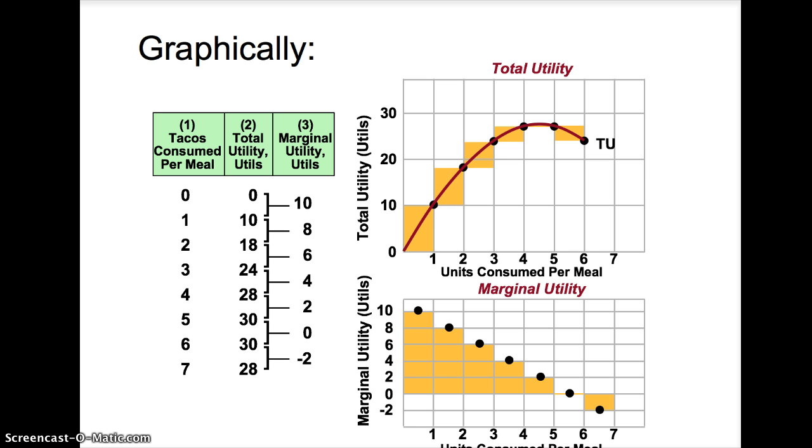The diagram showing marginal utility is a great visual of the law of diminishing marginal utility. Additional satisfaction decreases as more tacos are consumed. In fact, the seventh taco yields dissatisfaction since marginal utility is negative.